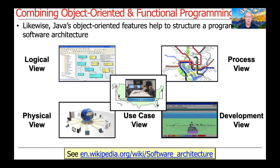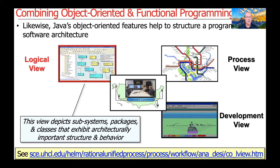Java's object-oriented features also play an important role in non-trivial programs because they help to structure a program's software architecture. If you take a look at the link at the bottom of the slide, you'll see a discussion of the so-called 4+1 model of software architecture, which deals with various views: the logical view, the physical view, the process view, the development view, and the use case view. We're going to focus our attention on the logical view, which depicts the subsystems, packages, and classes that exhibit architecturally important structure and behavior.